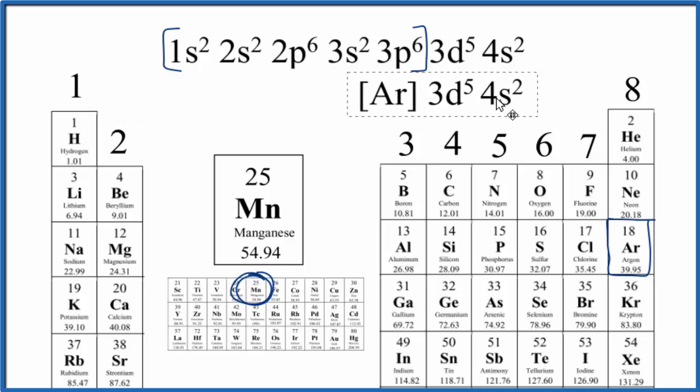So here we go. We've condensed it. And now if we look outside of the noble gas core, this noble gas core here, we have 3d5 and 4s2. So we have 5 plus 2. Manganese has 7 valence electrons.